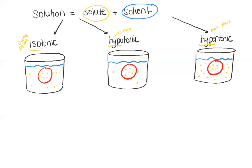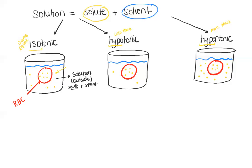Let's assume that we have a specific type of cell — a red blood cell represented in red here. Around it is the solution I'm talking about, found outside the red blood cell. This solution contains a solute shown in yellow — let's assume it's sugar, though it could be salt or anything — and then of course the water here represents our solvent.